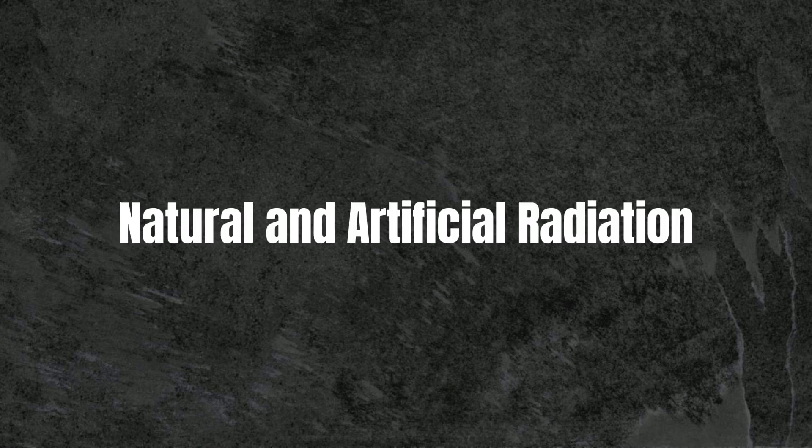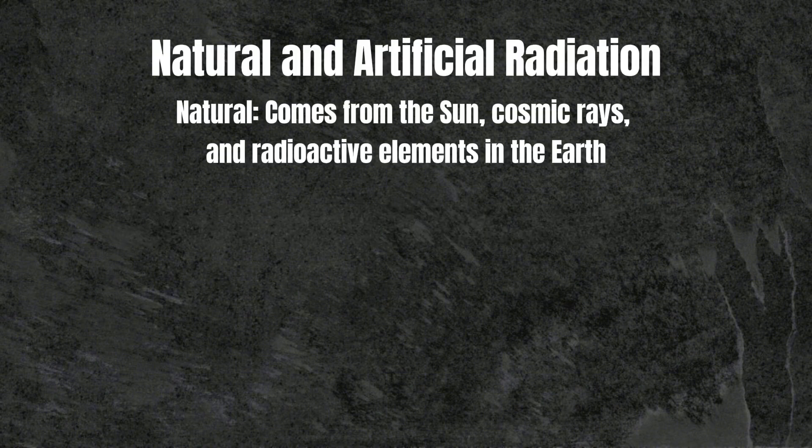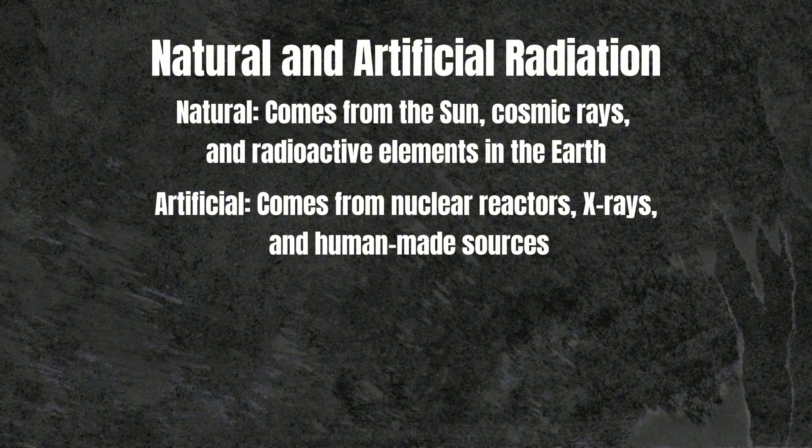Radiation can be classified in different ways, depending on its origin and energy level. The main categories are natural and artificial radiation. Natural radiation comes from the sun, cosmic rays, and radioactive elements in the Earth. Artificial radiation comes from nuclear reactors, X-rays, and human-made sources.